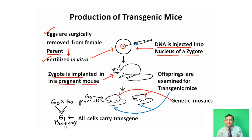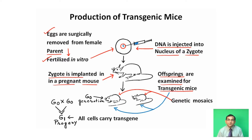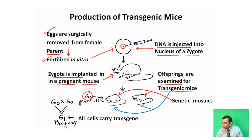Offspring are then examined for transgenic mice. In the G0 generation, genetic mosaics are obtained. What is a genetic mosaic? Genetic mosaic means that both transgenic cells as well as normal cells are present in the mouse, so these are called genetic mosaics.